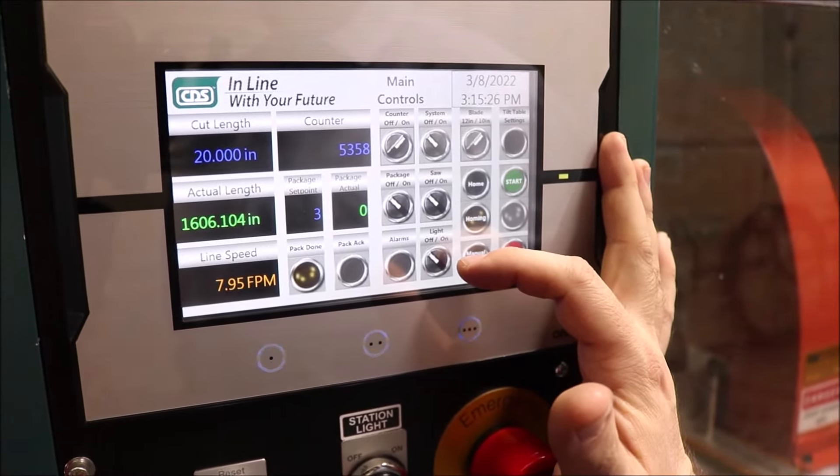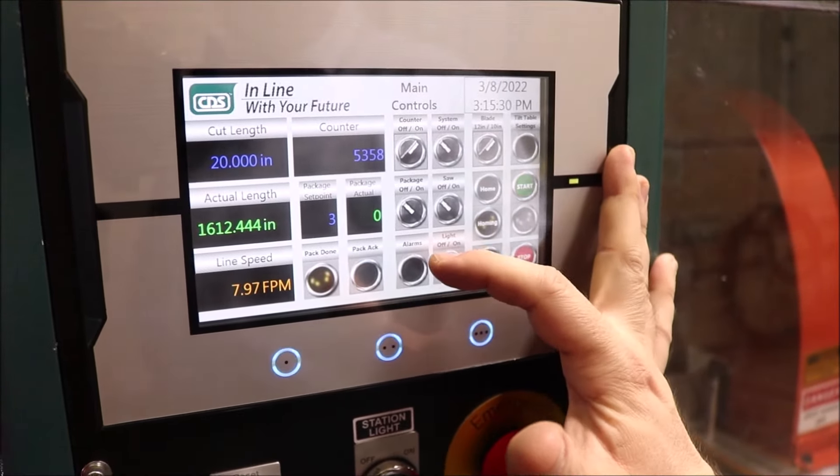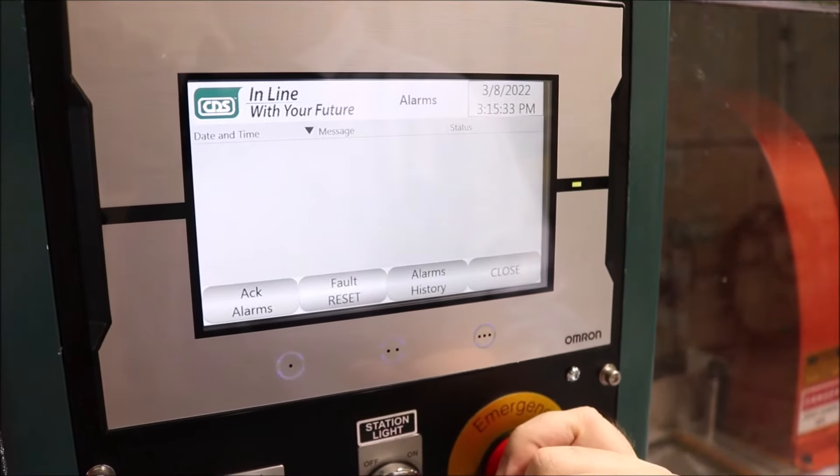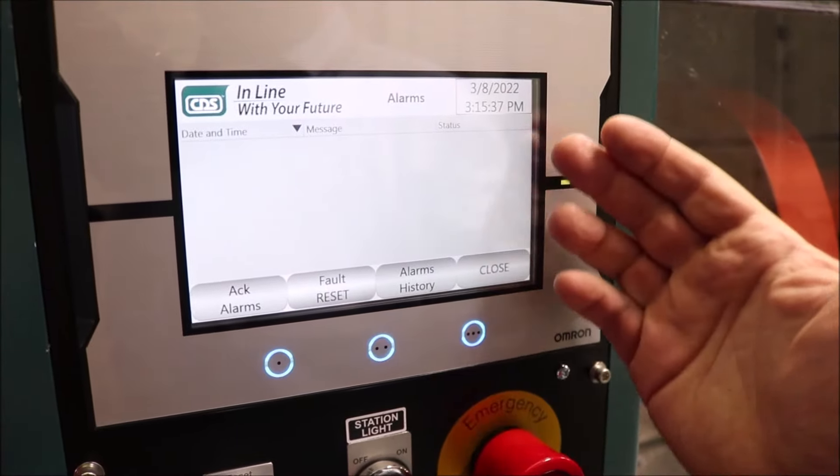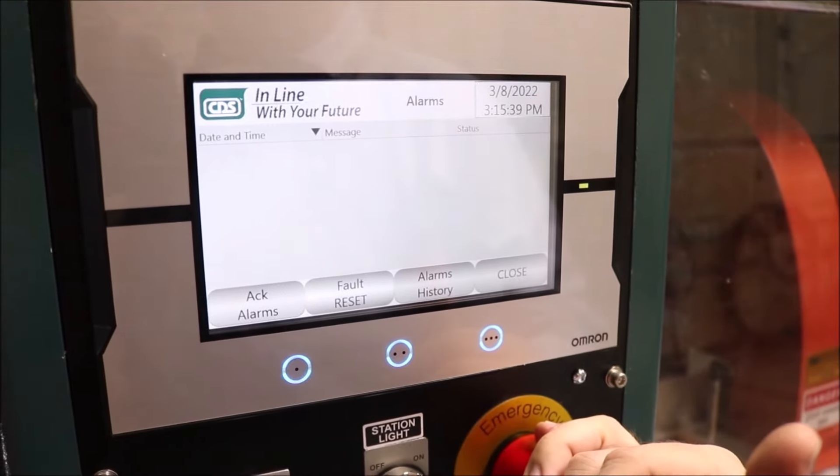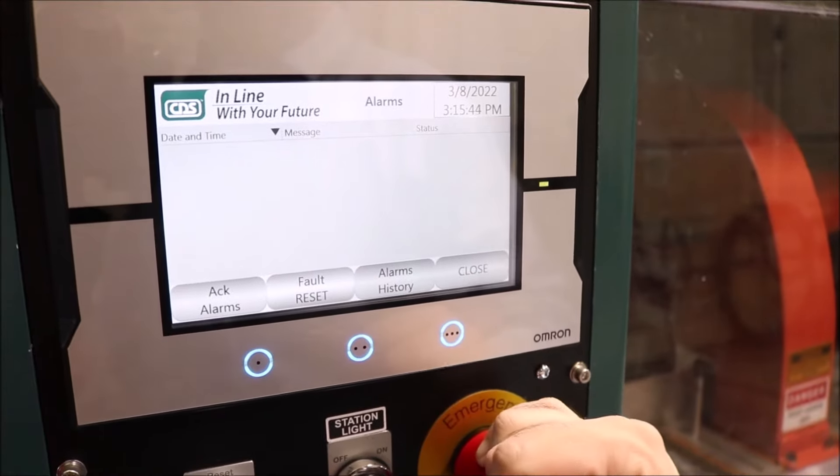Then you have the light on/off button and you have the alarm indication. When we go in the alarms, we're going to press on it. It brings you to the alarm screens. Currently we have no alarm, but if ever there will be one, we need to acknowledge the alarm in order to clear it and also do a fault reset.